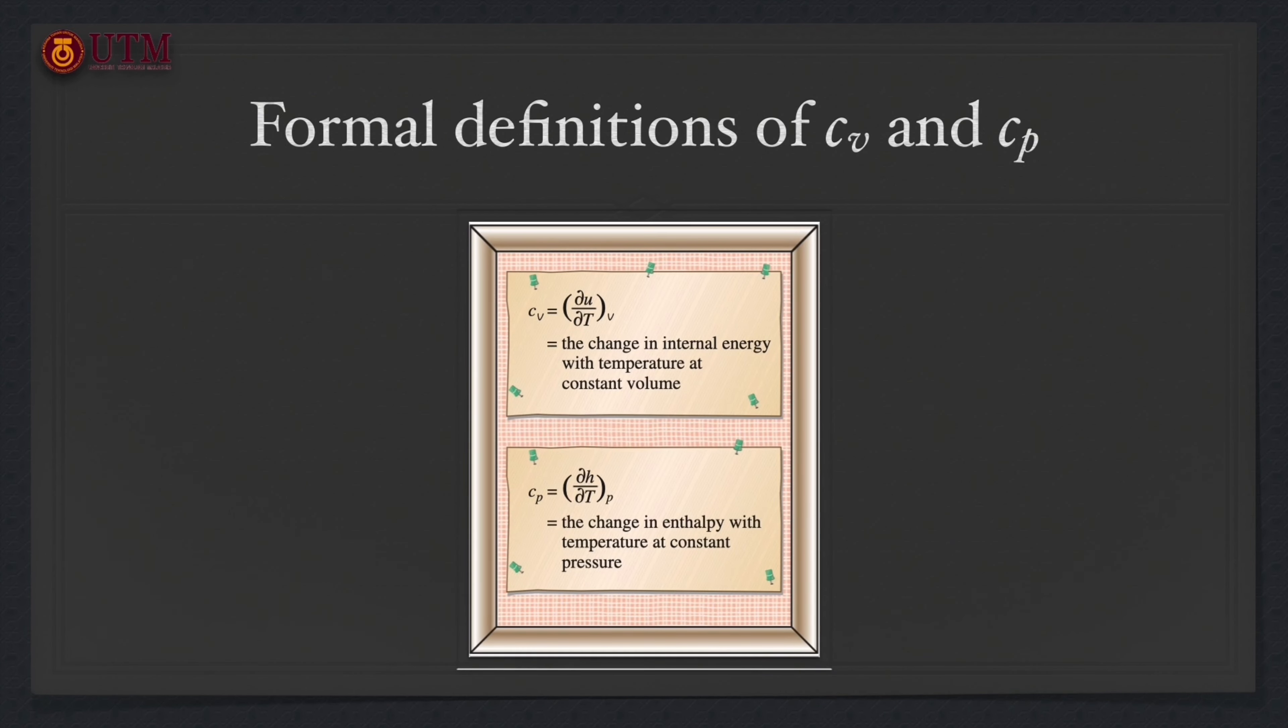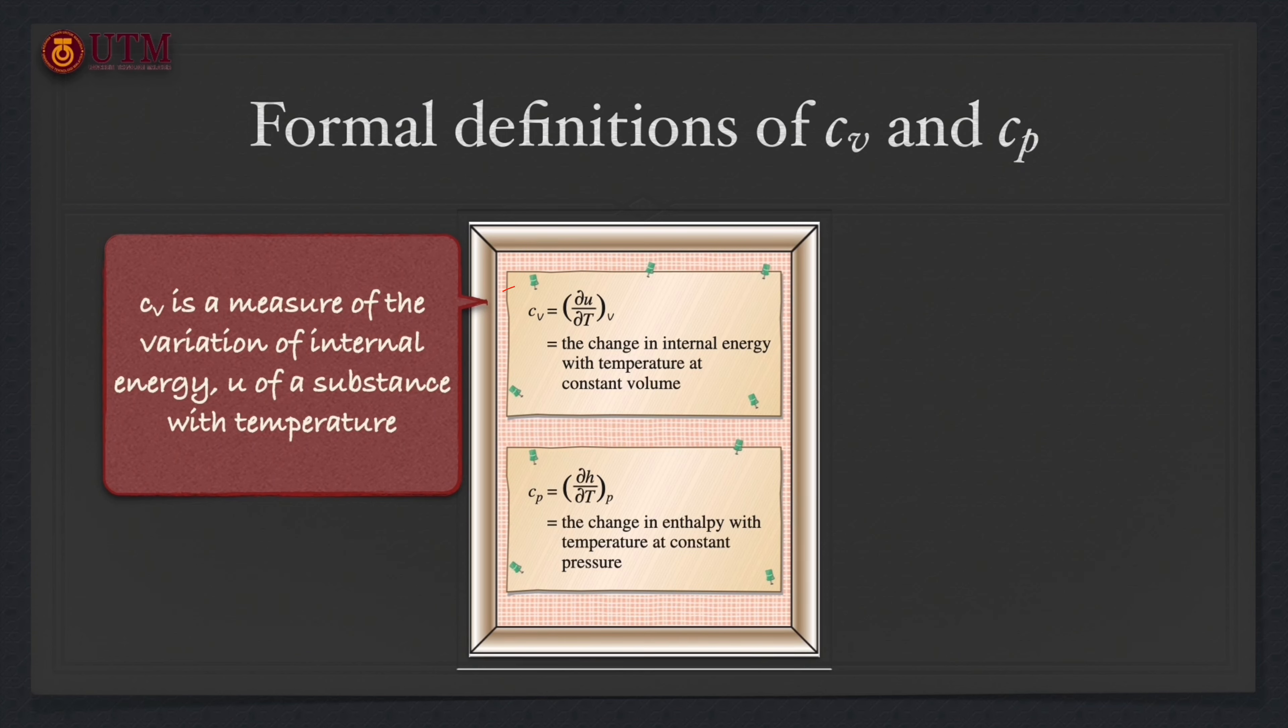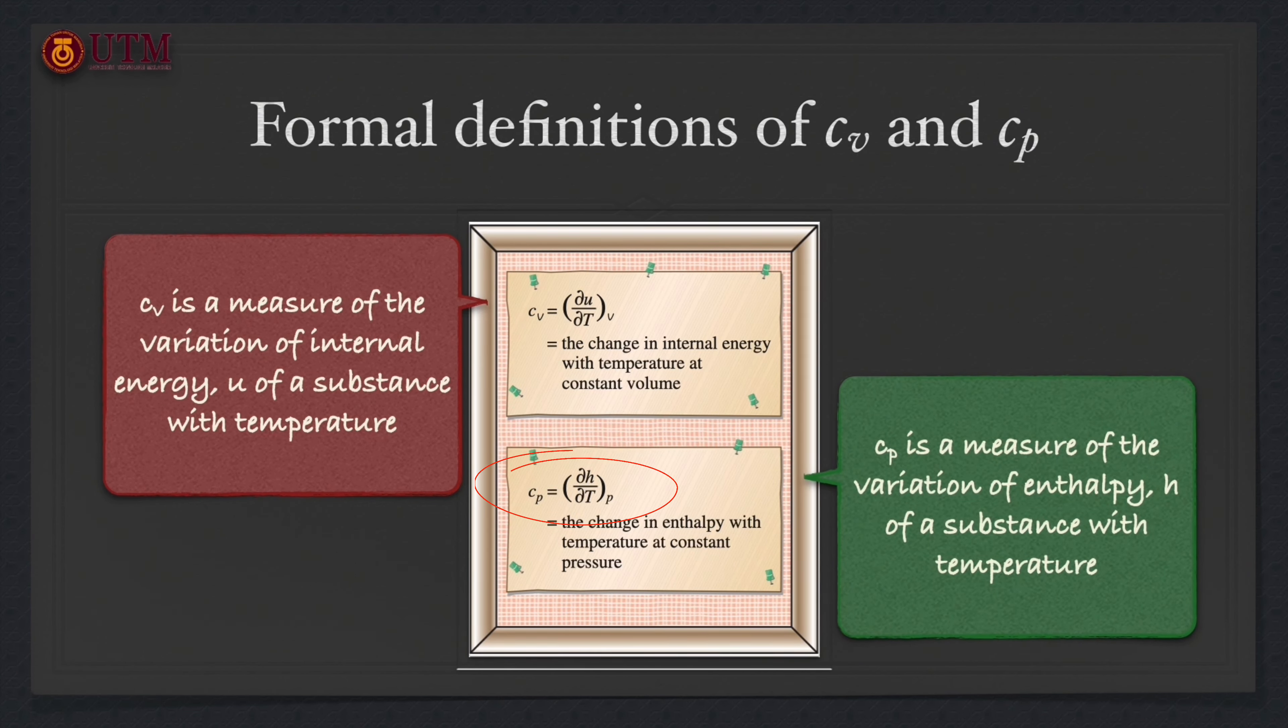The difference between both specific heats for a fixed mass in a stationary closed system is illustrated here. Cv is a measure of the variation of internal energy of a substance with temperature undergoing a constant volume process. And Cp is a measure of the variation of enthalpy of a substance with temperature experiencing a constant pressure process.